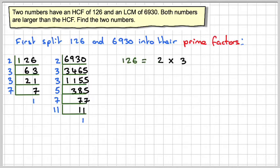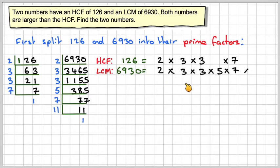Writing them out: 126 equals 2 × 3 × 3 × 7. Leave a gap for the 5 that will be underneath. The LCM, 6930, is 2 × 3 × 3 × 5 × 7 × 11.